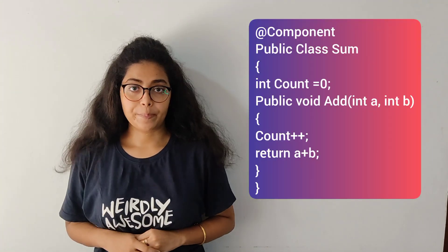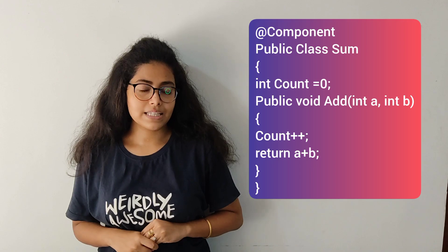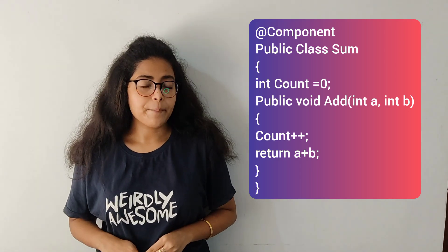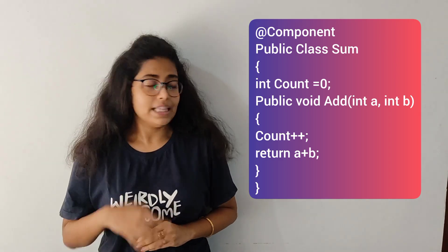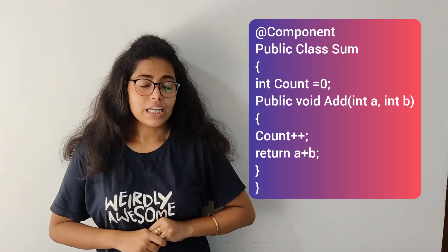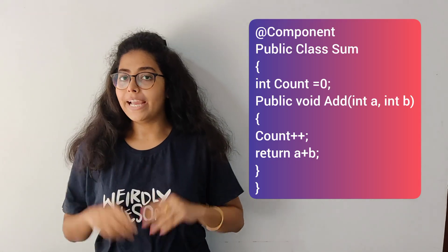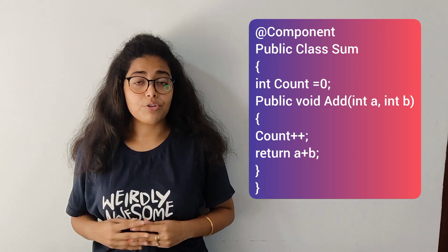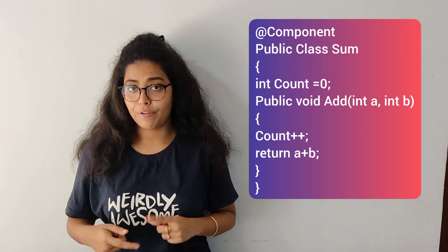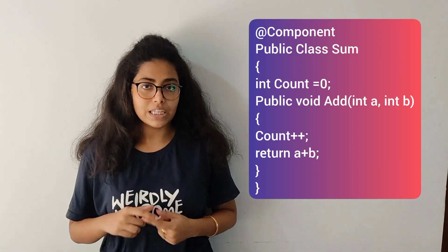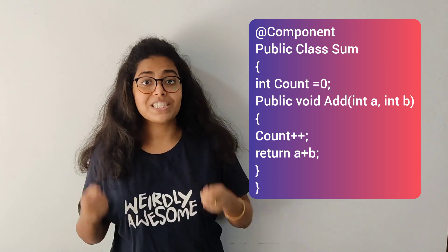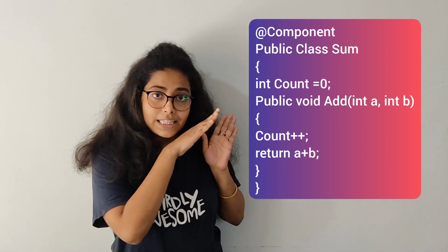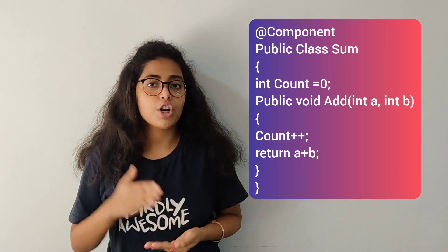Let's look at this code snippet first. If this is your singleton class, invoking the add method by two user request threads will cause an issue, because the counter object will be shared by both threads and they will try to manipulate that counter object's value at the same time concurrently. This produces unpredictable results. That is why any object that maintains state at the object level — you should not keep such an object inside your singleton class.